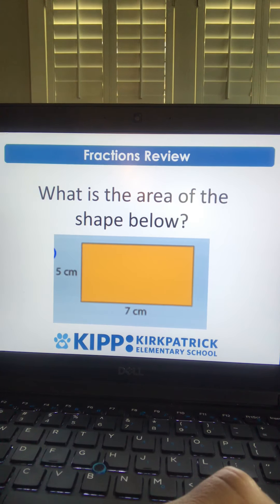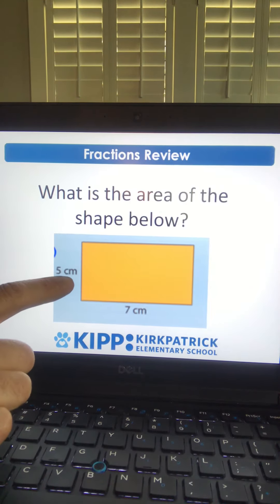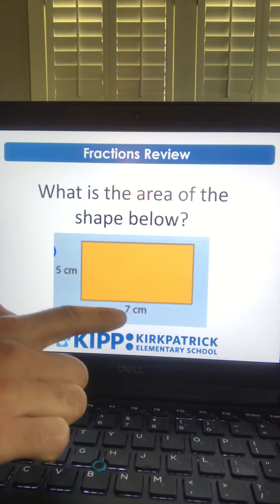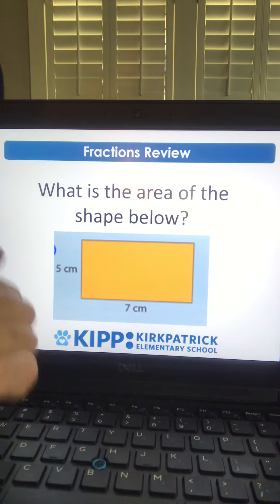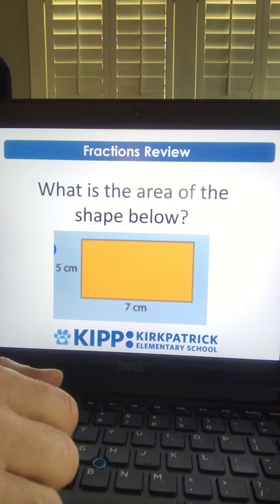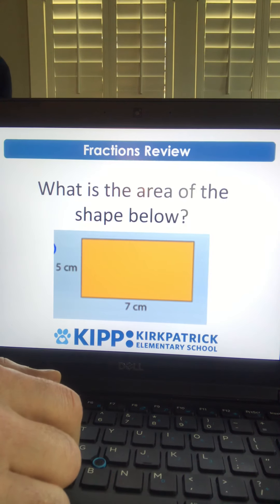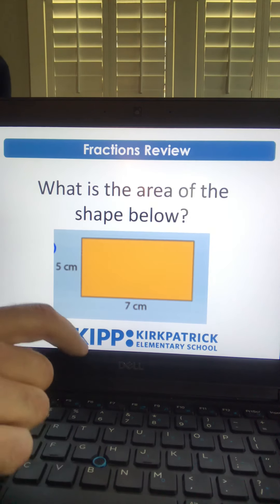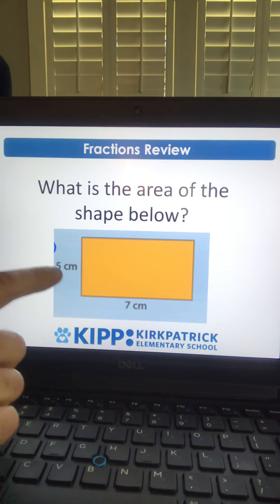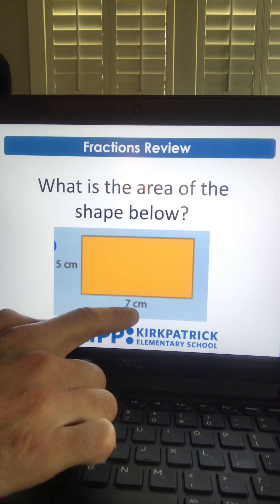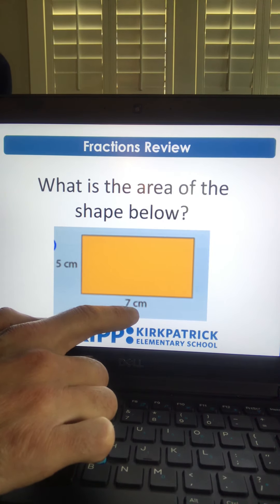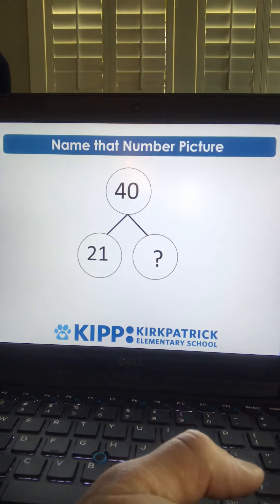So here's a problem about area. It says what is the area of the shape below? This side is 5 centimeters, this side is 7 centimeters. What is the area of that rectangle? Just like we practice in class, you should have gone 5 centimeters times 7 centimeters, so our area is 35 centimeters squared.